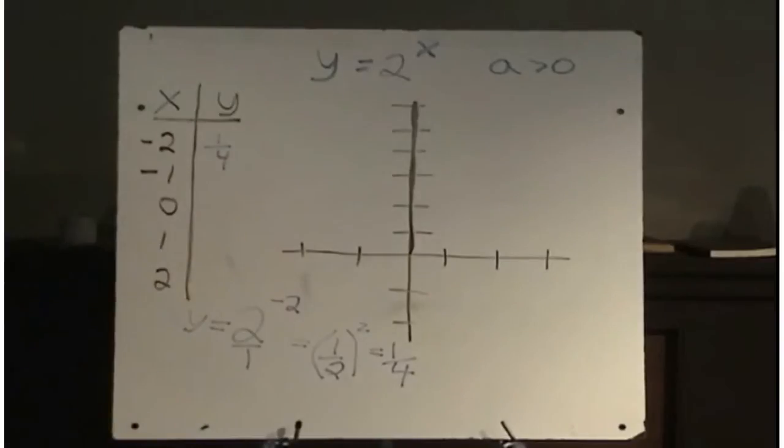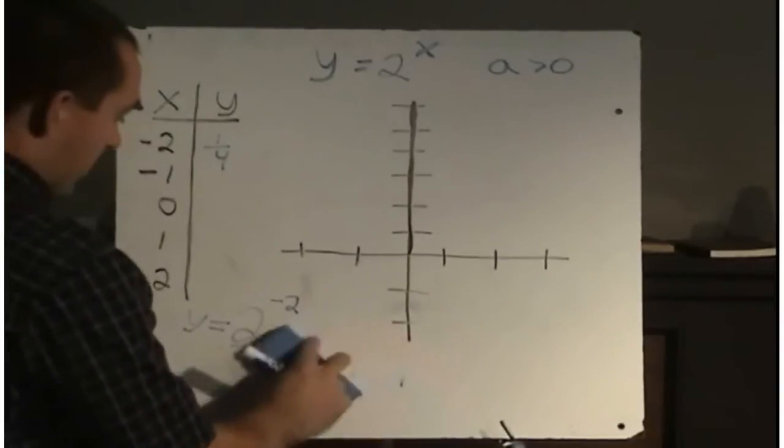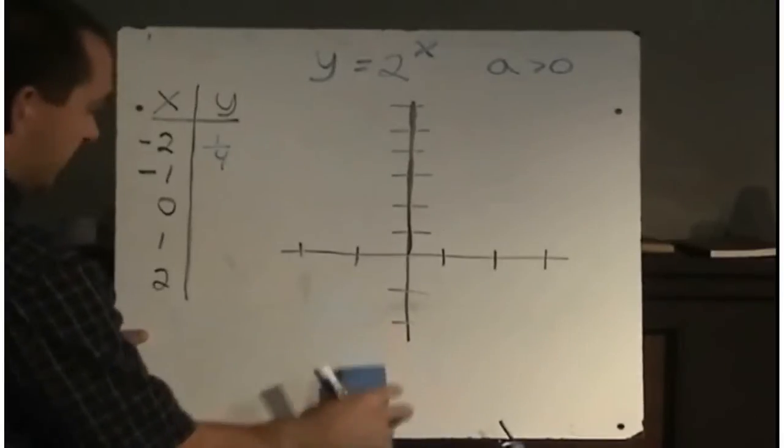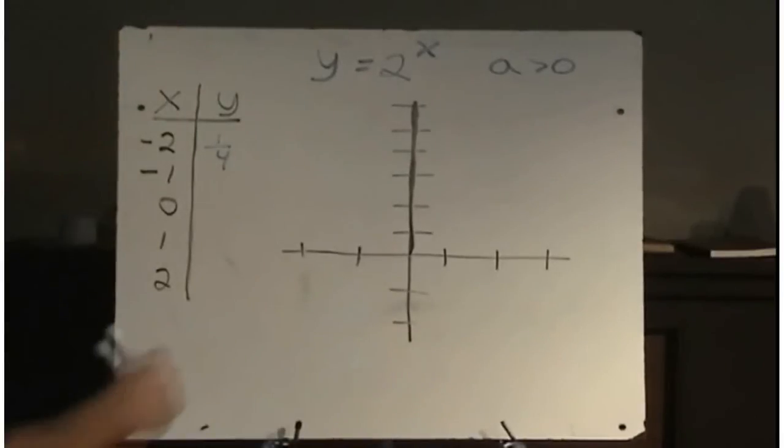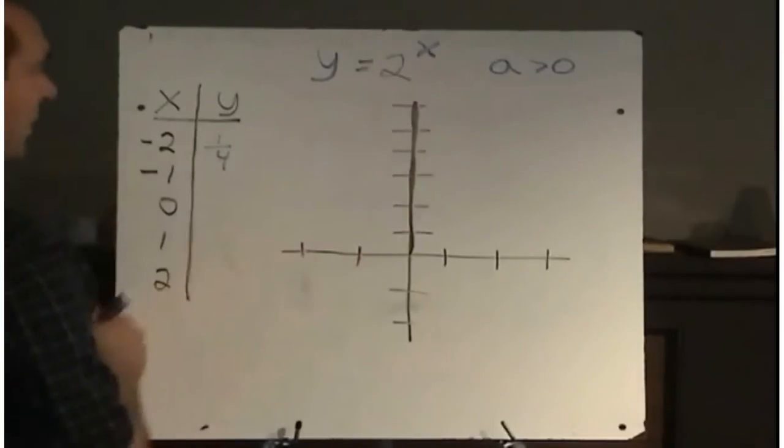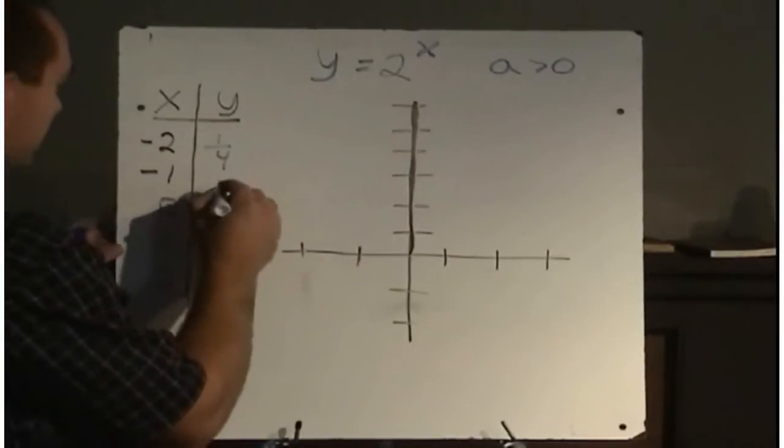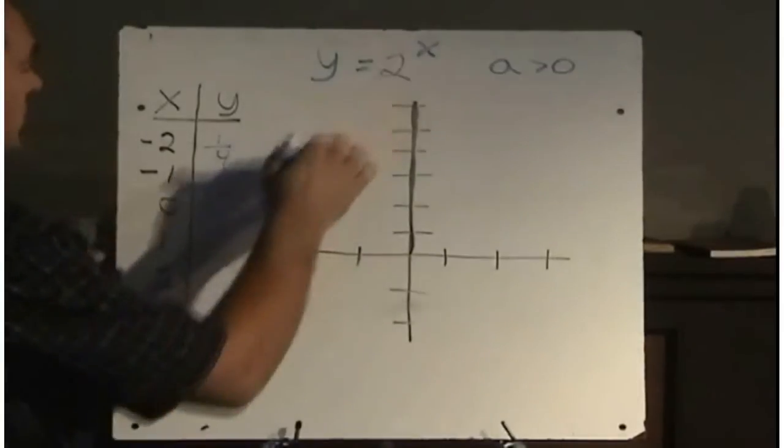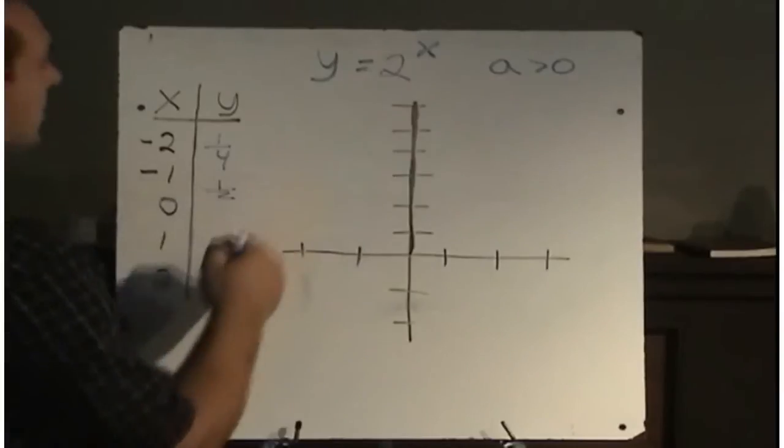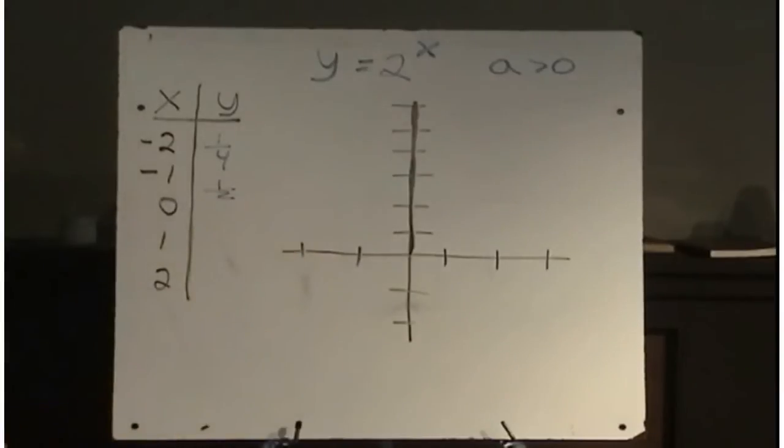So I have a y value of 1 quarter when I have an x value of negative 2. Let's put in negative 1. 2 to the power of negative 1, again we're going to take the reciprocal. The reciprocal of 2 is 1 half, and 1 half to the power of 1 is still 1 half.